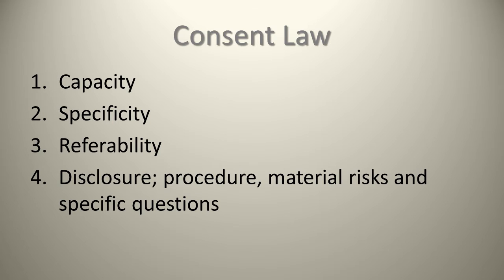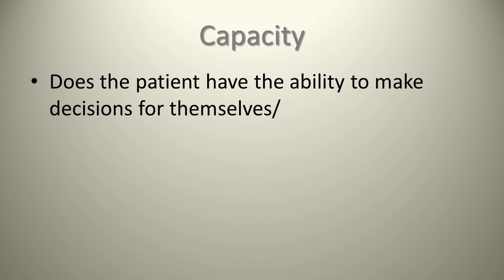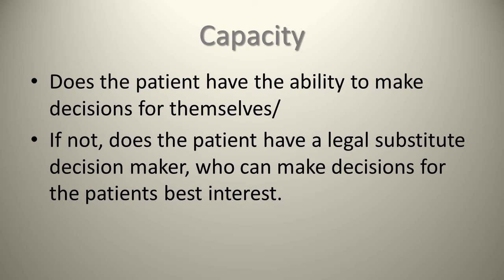From a consent perspective, the first element we'll cover is capacity. In its simplest form, capacity asks: does the patient have the ability to make decisions for themselves? If they do not, in Ontario, Canada, there is something called the Health Care Consent Act. If not, does the patient have a legal substitute decision maker who can make decisions for the patient's best interest? It's important to understand that the substitute decision maker must act in the patient's best interest — not their own.